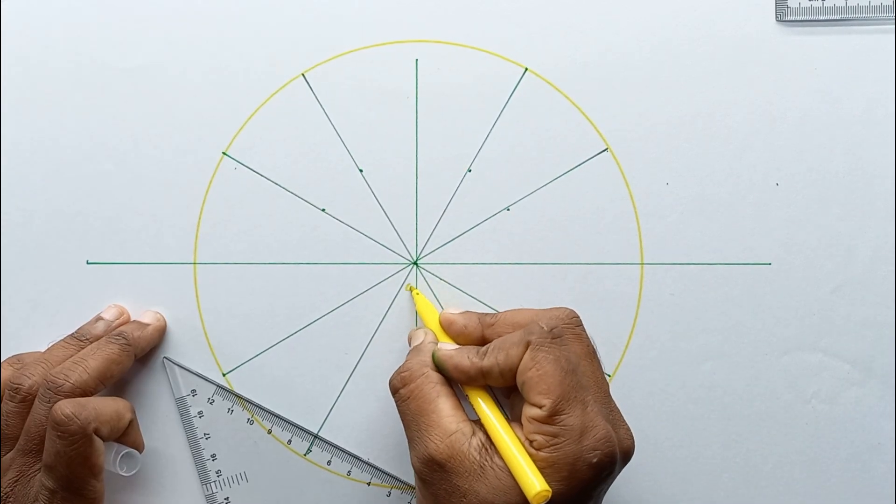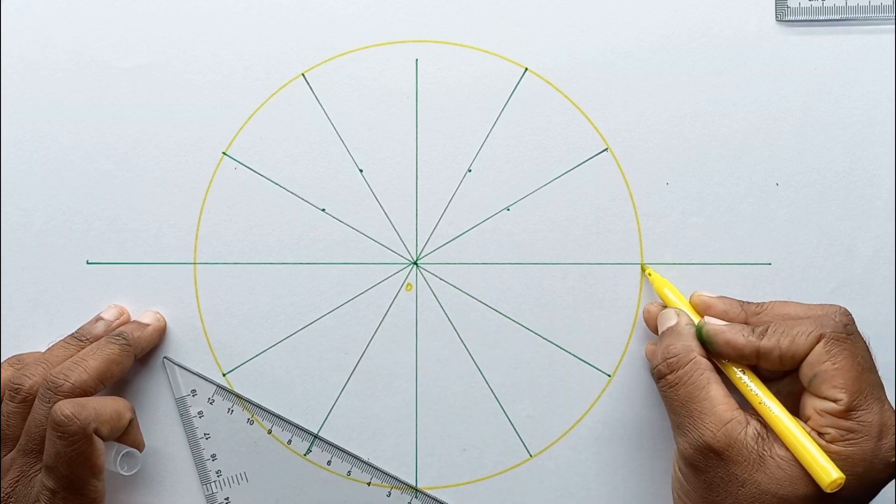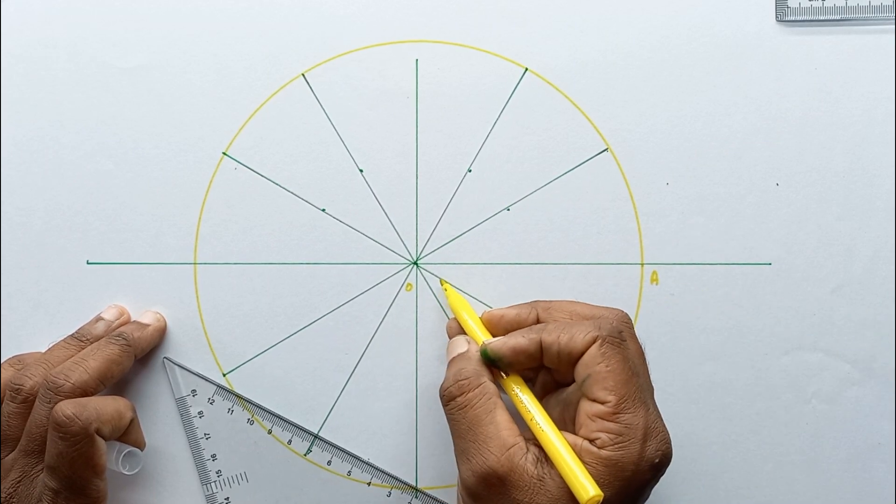Let's mark this point as O, this point as A. Then this OA line I'm going to divide into 12 equal segments.